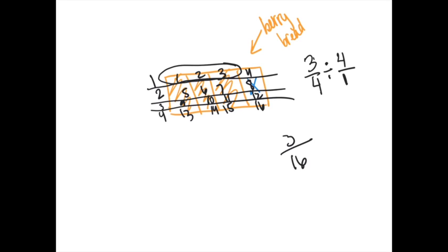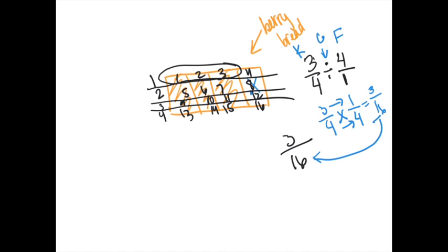We definitely want to check to make sure that when we do it with an algorithm, it works. The rule for dividing fractions is: keep the first fraction exactly the same — three-fourths. Change the division sign to a multiplication sign. And then for four over one, we flip it upside down to make it one-fourth. Then it becomes a multiplication problem — all you have to do is multiply across, which gives us three-sixteenths. Do they match? Yes, they do. So we are right, and we know how to divide fractions.